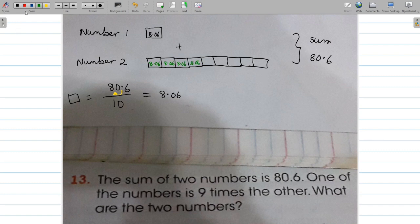So it's easy to see now that to find the value of our second number, it would be nine portions of 8.06, which will give you 72.54. And now our final statement will be: the two numbers are 8.06 and 72.54.